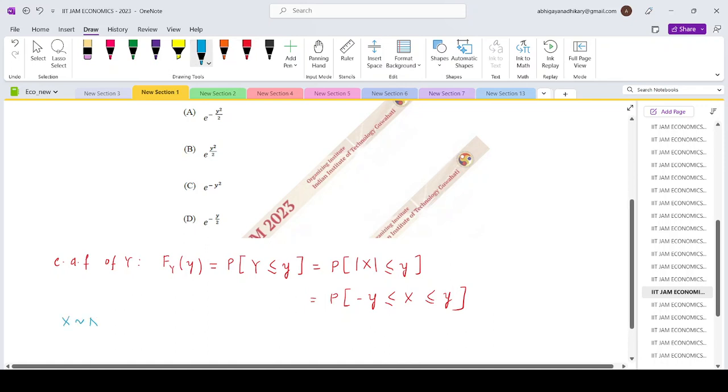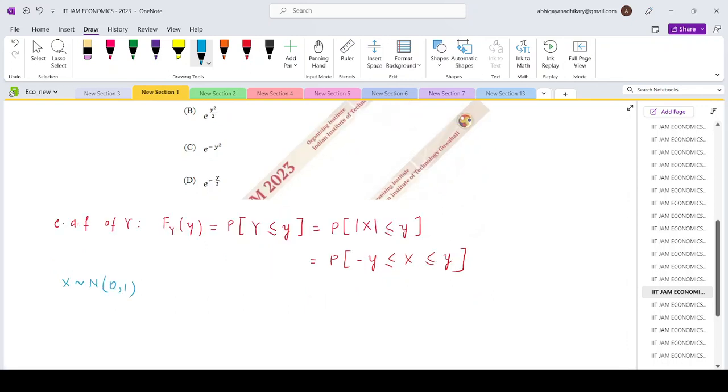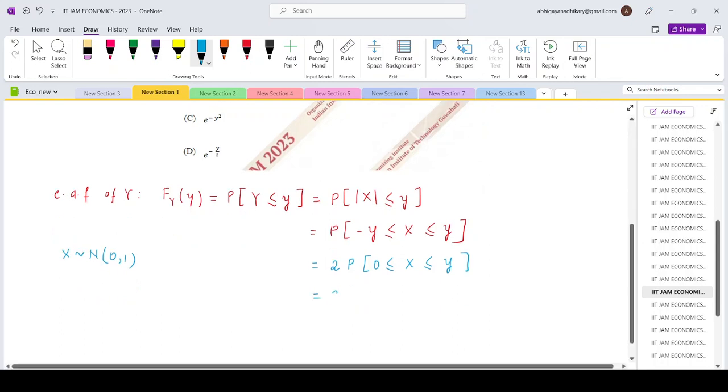We are given that X follows a standard normal distribution, normal 0 1. So that means it's symmetric about 0. So this expression can be written as 2 times the probability from 0 less than equals to X less than equals to Y. This can be written as, given the PDF of the standard normal distribution, from 0 to Y 1 by root 2 pi e to the power minus Z square by 2 DZ.